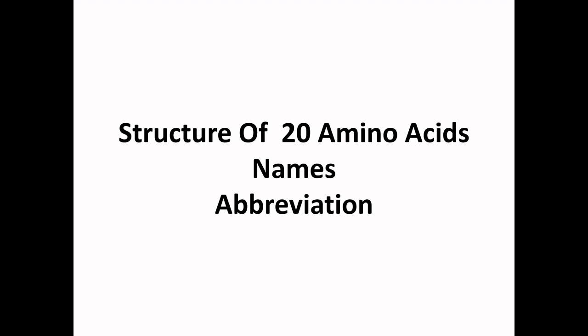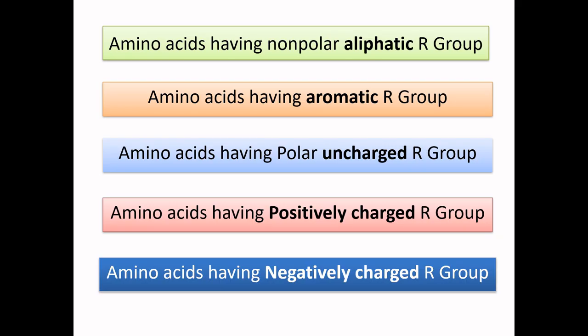In this video I am going to help you guys remember all 20 amino acids — their structures, names, and abbreviative names — by comparing everything with each other. Watch this video till the end and I am pretty much sure that you will be able to remember at least 15 amino acids among those 20. I have divided these 20 amino acids into five groups, and I have given a different color to each group as you can see in the picture, so that it will be easier for you to remember which amino acid belongs to which group.